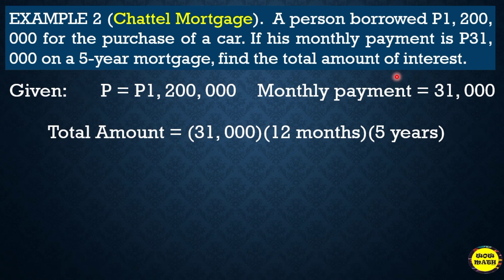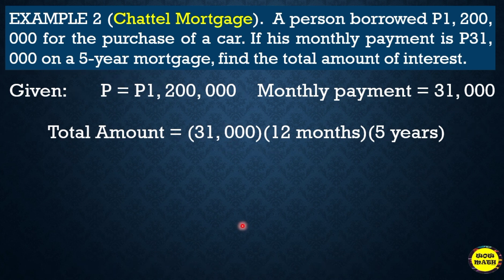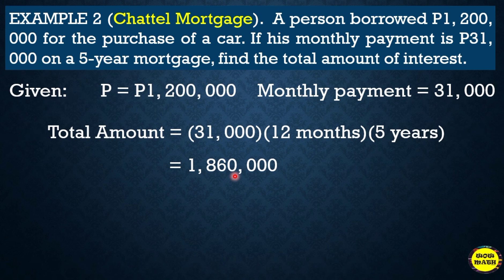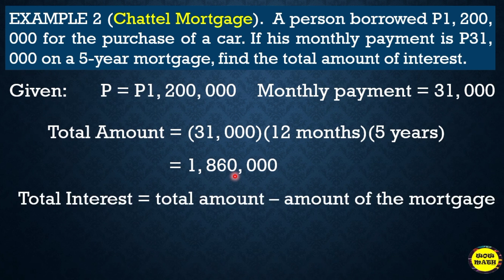To find the total amount paid, we multiply: thirty-one thousand times twelve months times five years. So thirty-one thousand × 12 × 5 gives us the total amount. The answer is one million eight hundred sixty thousand — that is the total amount paid for the car.